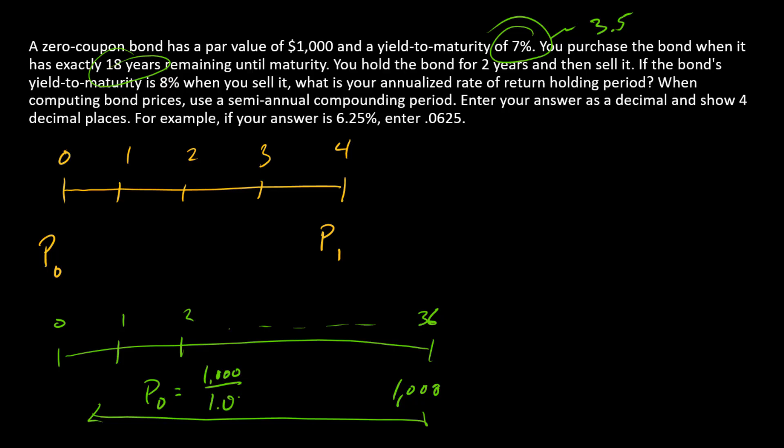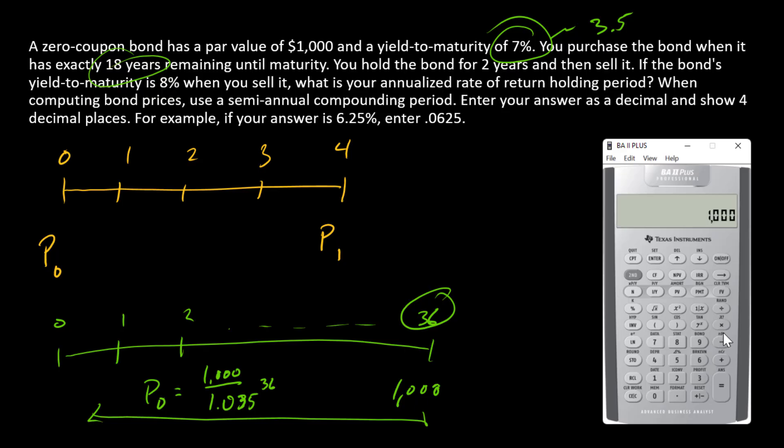$1,000 divided by 1.035 raised to the 36th power. So the initial price is $289.8327.